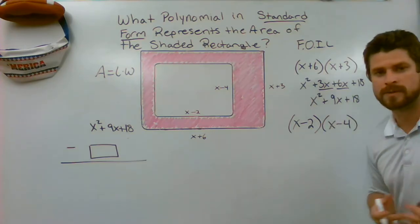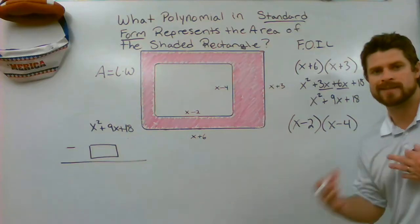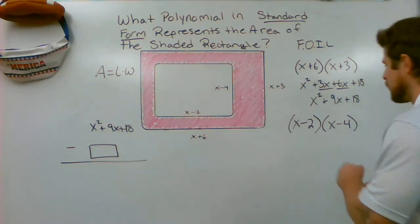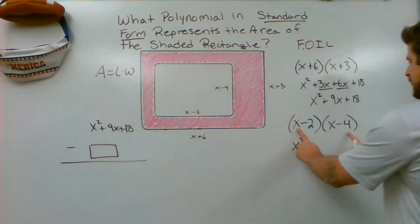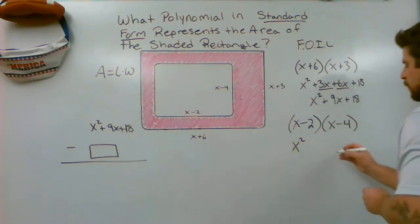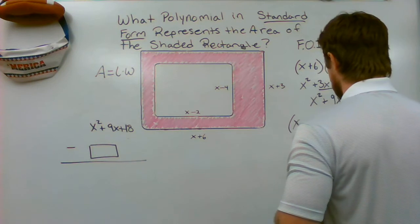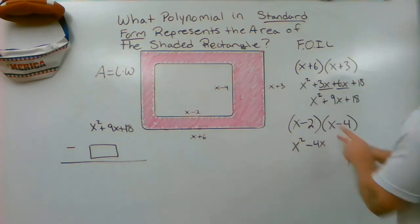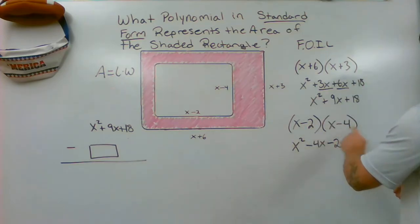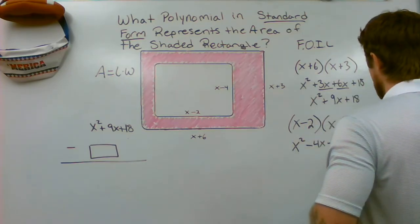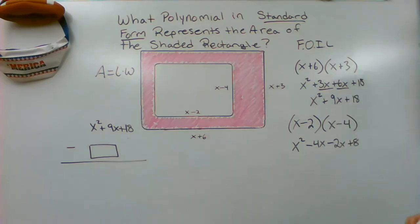You have to be a little bit more careful here because we're dealing with some negative values. Make sure we don't make some silly errors on our work. So first, X and X are going to make X squared. Outside, X and negative 4 is going to make negative 4X. Inside, negative 2 and X will make a negative 2X. And my last, a negative times a negative, will equal a positive. And 2 times 4 is 8.